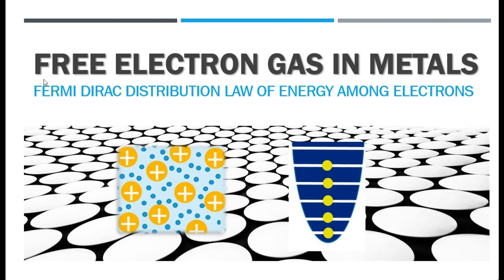Hello everyone. In this lecture, I am going to discuss free electron gas in metals and the Fermi-Dirac distribution law of energy among electrons. As we all know, electrons are half-spin particles, so they come under the category of Fermions and their behavior can be studied using Fermi-Dirac distribution law.